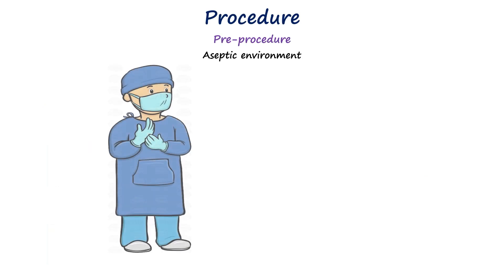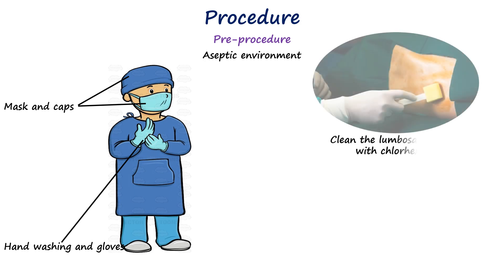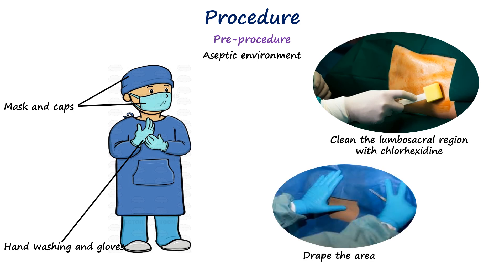Spinal anesthesia must be performed under a strict aseptic environment. Thorough handwashing and surgical scrubbing of the hands should be carried out before the procedure. Sterile gloves, mask, and cap are then applied to minimize the risk of introducing infection. A wide area of the lumbosacral region, extending from the lower border of the scapulae to the iliac crests, should be painted with an appropriate antiseptic solution such as chlorhexidine in alcohol and allowed to dry completely to ensure maximal bactericidal effect. After adequate contact time, excess antiseptic solution is removed, and the field is draped to expose the midline from approximately T12 to S1 and laterally to the quadratus lumborum muscles.